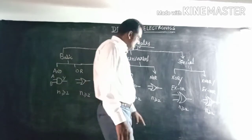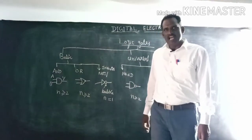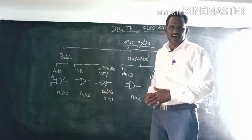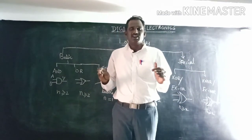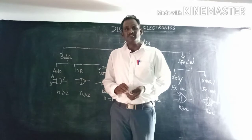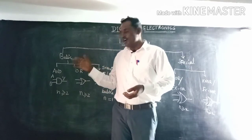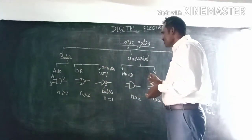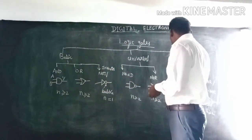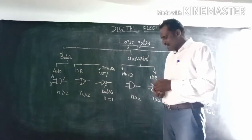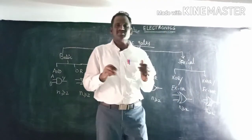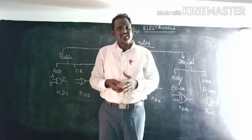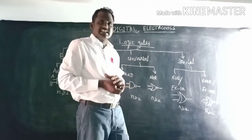Why do we call NAND and NOR gates universal gates? If you want to design an OR gate or an AND gate but don't have those gates available, you can convert a NAND gate or NOR gate into any one of the basic or special gates. You can implement any Boolean function using only NAND or NOR gates — that is why they are called universal gates.